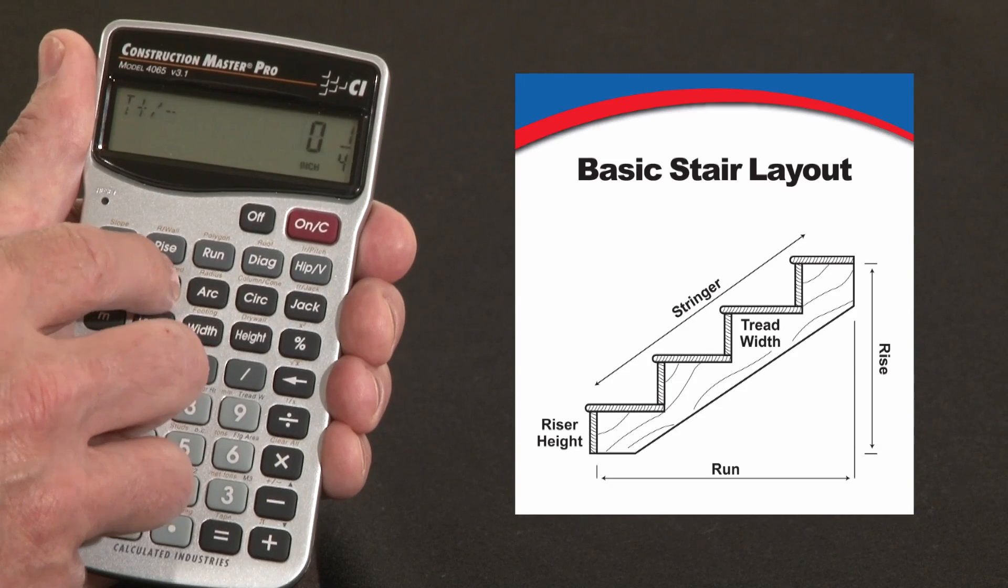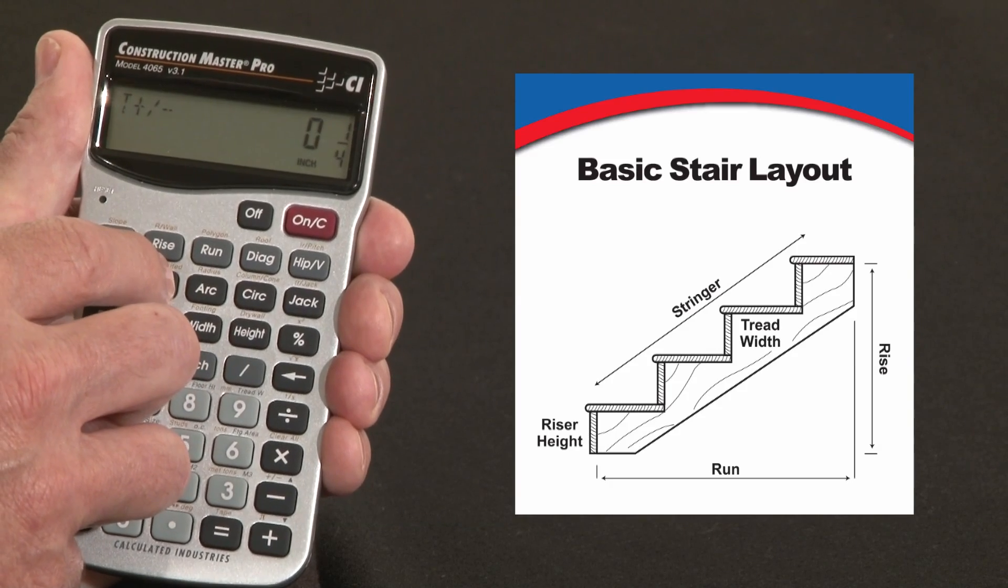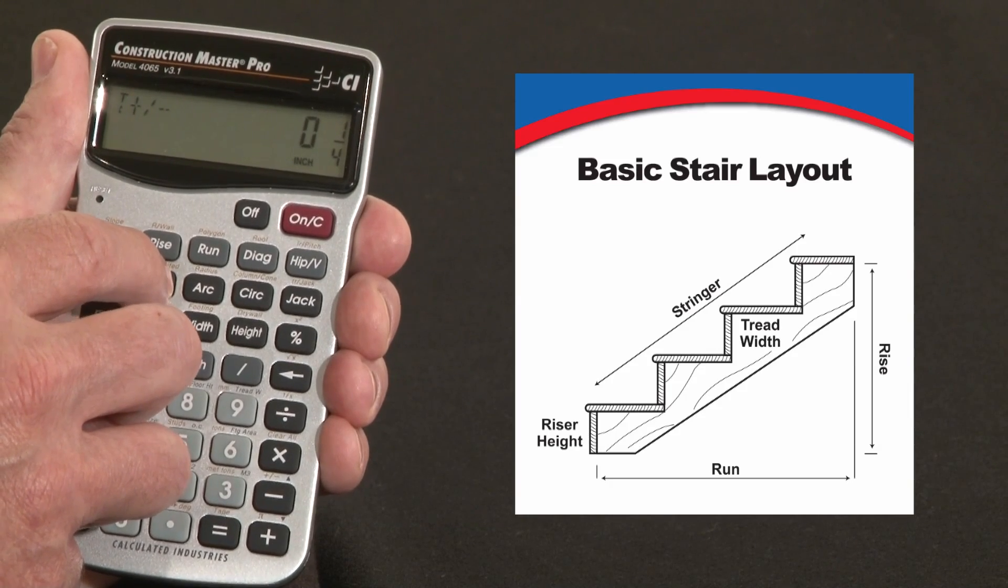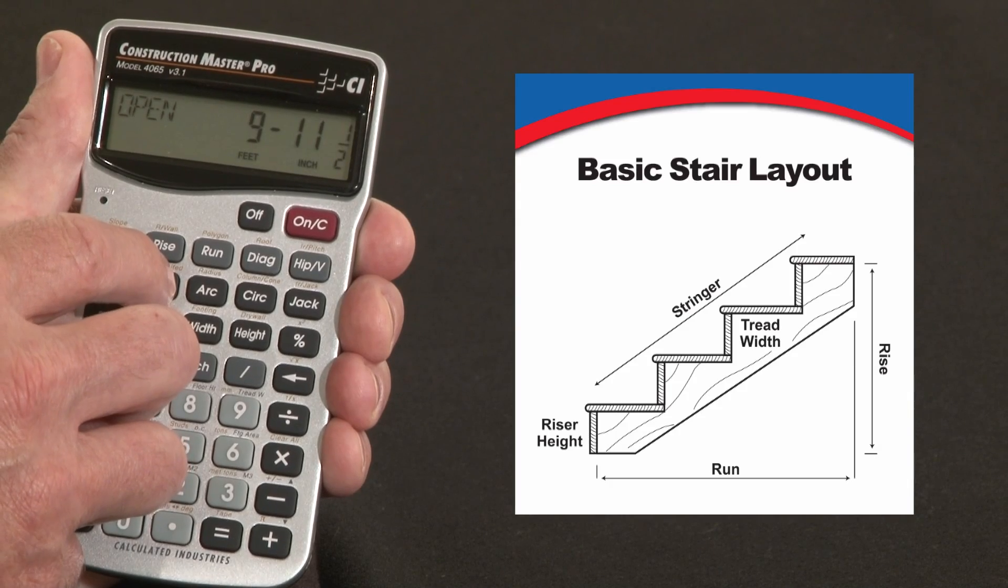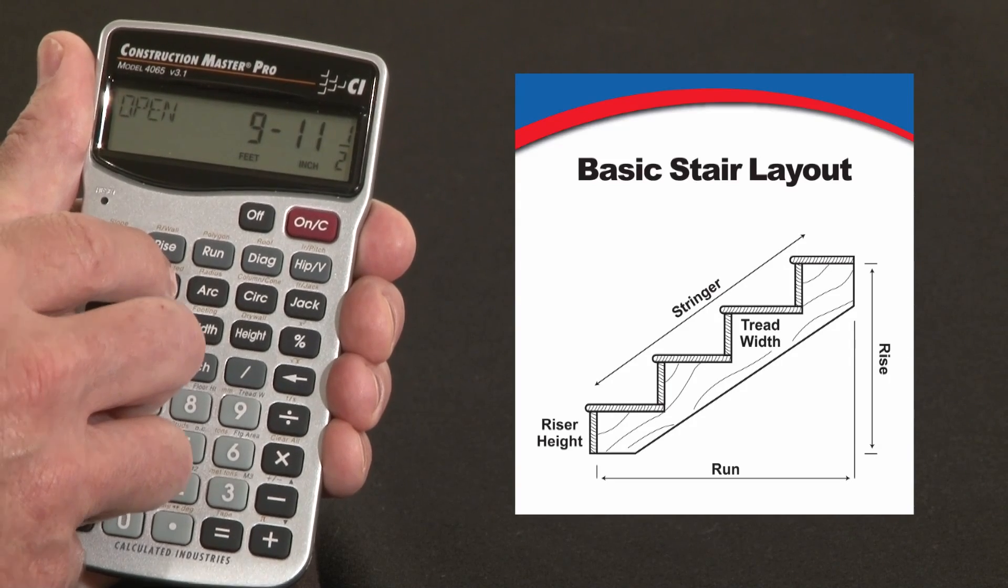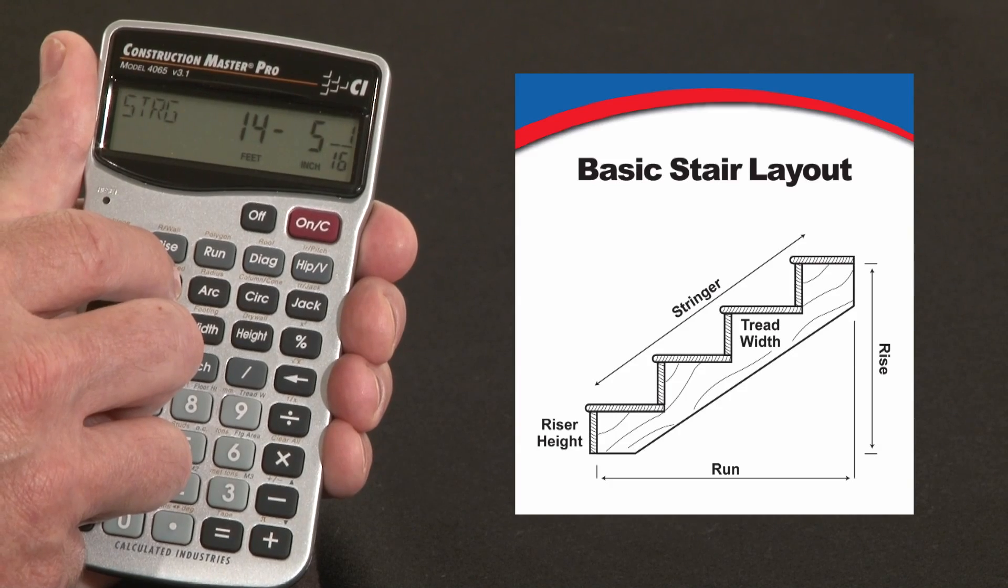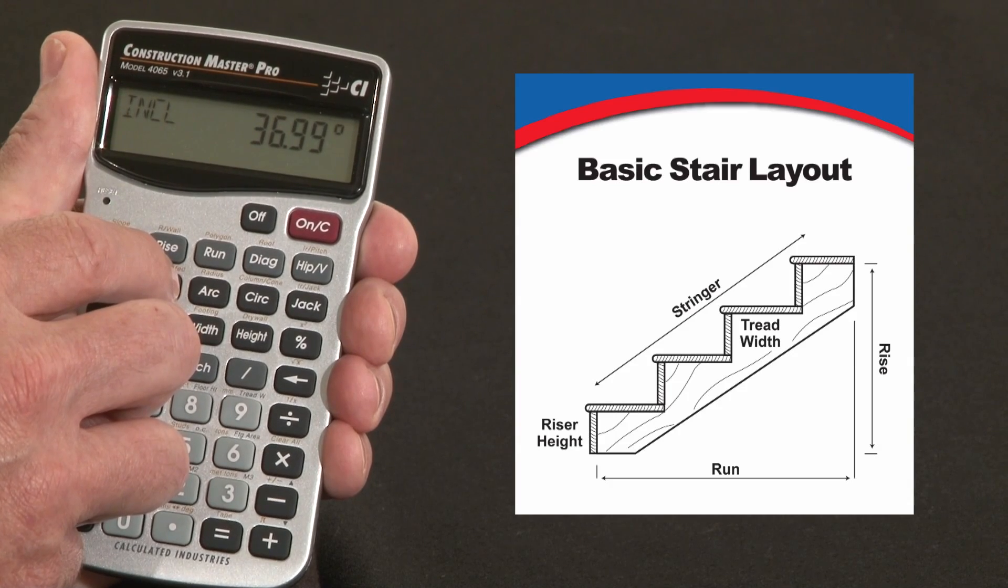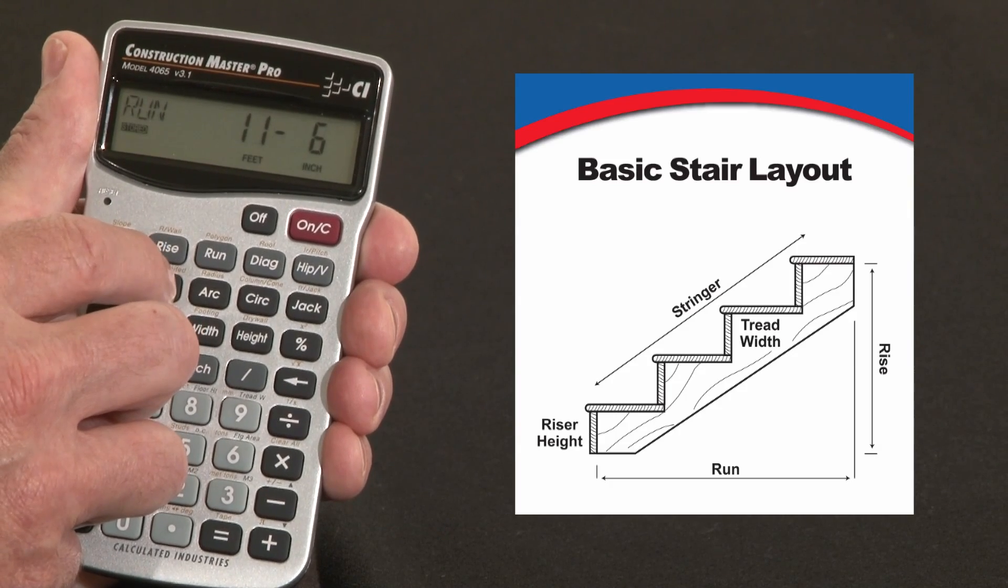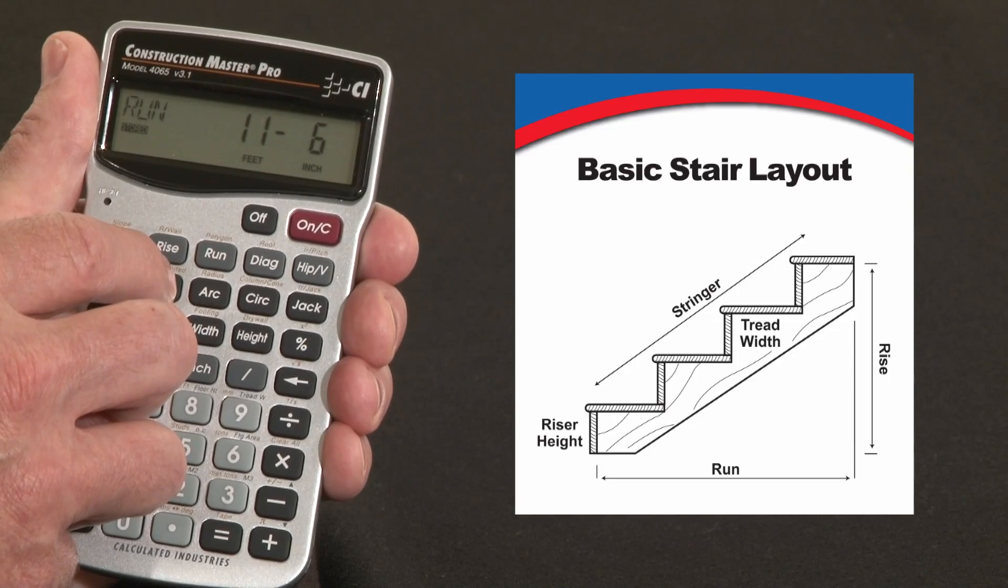There's 14 treads, there's going to be an adjustment of 1 quarter inch, that's the remainder. The stairwell opening is now 9 and 11 and a half. The stringer length is 14 feet 5 and 1 sixteenth, and the angle is 36.99, and of course the total run is the 11 foot 6 that we entered in.